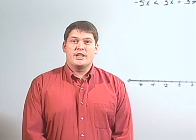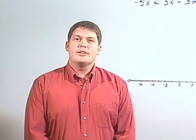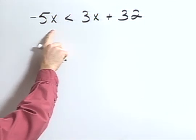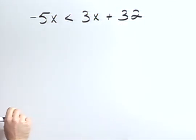Solve the inequality, graph your answer on a number line, and then write your answer in interval notation. Negative 5x is less than 3x plus 32.